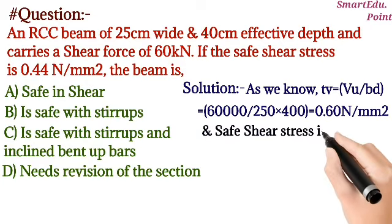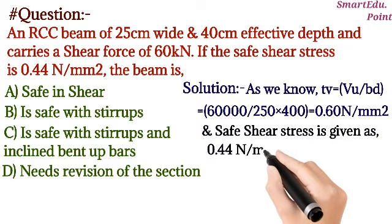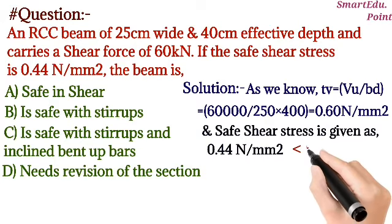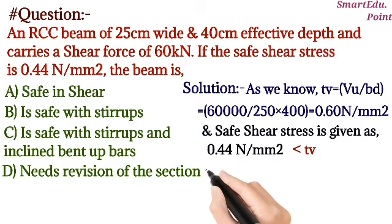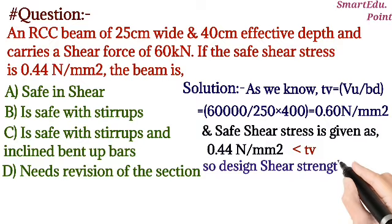And it's given that safe shear stress tau c is 0.44 newton per mm square. So if you compare this, 0.44 is less than tau v, so we have to go for design of shear. So let's find this design shear strength.